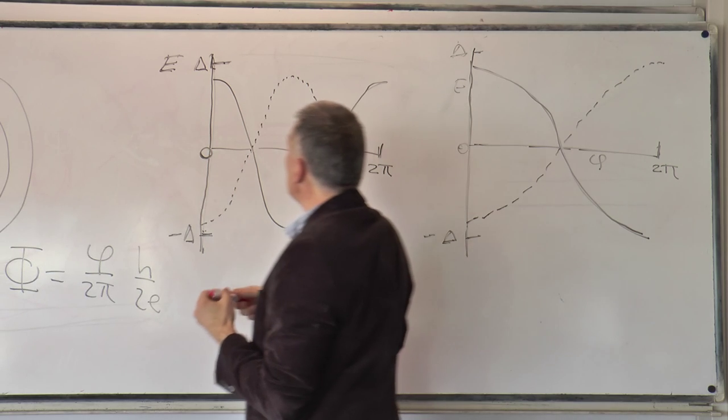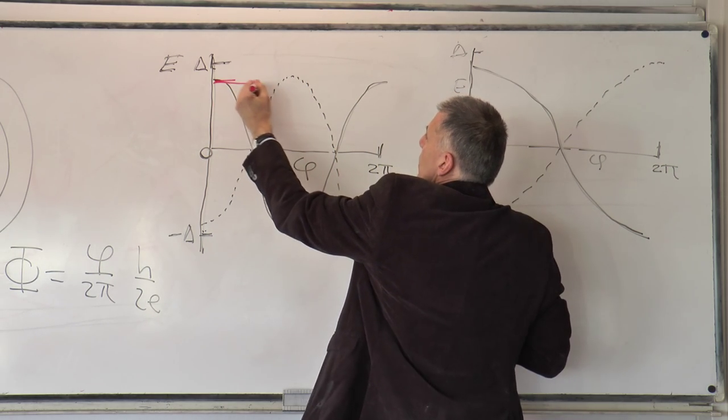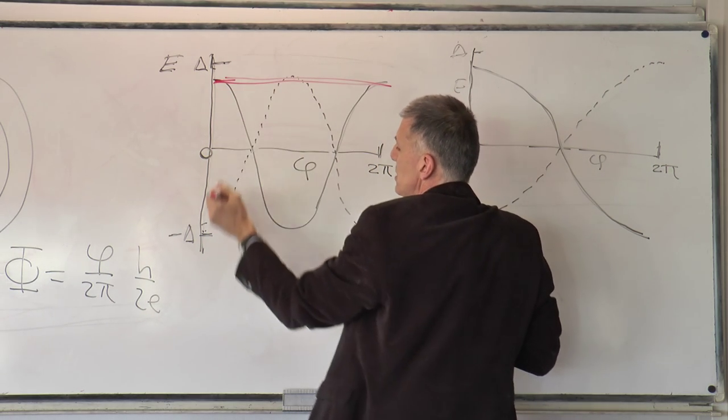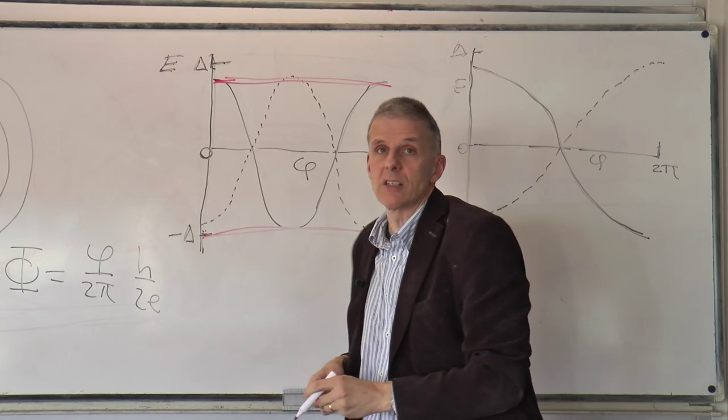And so when you have made this barrier really high, you will find that there is one level up here, basically flux independent, and there is another level down here, basically flux independent.